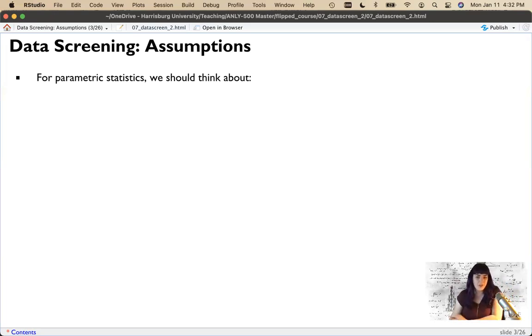For parametric stats, this means things that are based on the normal distribution. So ANOVAs, t-tests, regression, correlation. Non-parametric stats include things like chi-square, log regression, and there's a whole bunch more, the Mann-Whitney test. For most of our semester, we're going to do parametric statistics. So these are the things we want to check.